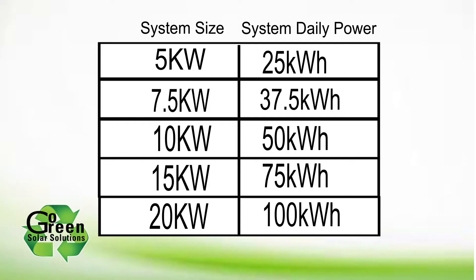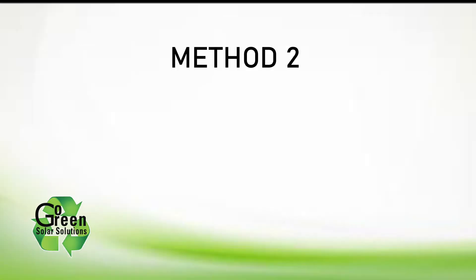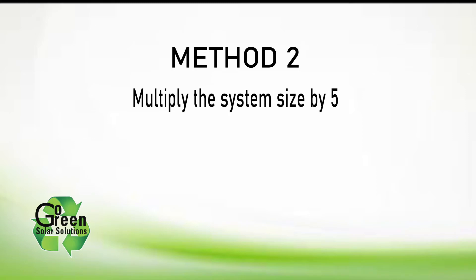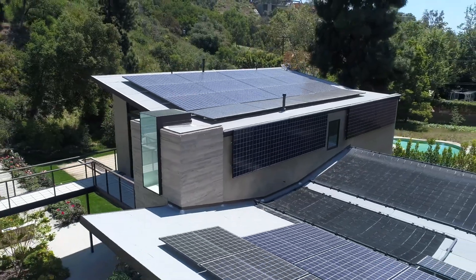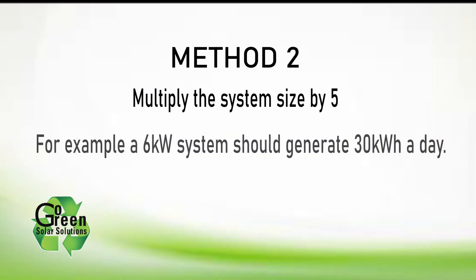Here are some examples of system sizes and how many kilowatt hours they will be producing per day. If your system is within 10% of these numbers, then your system is working well. Older systems will lose 1-2% per year. Another way to know how much power your solar system should be producing is by multiplying the system size by 5 — that's roughly the number of kilowatt hours your system should be generating. For example, a 6 kilowatt solar system should generate roughly 30 kilowatt hours per day.